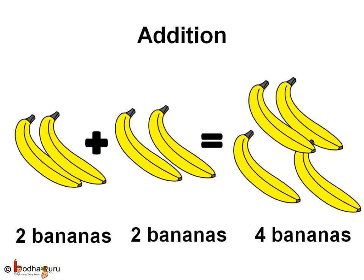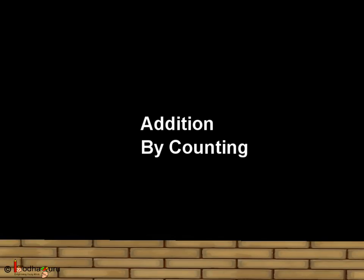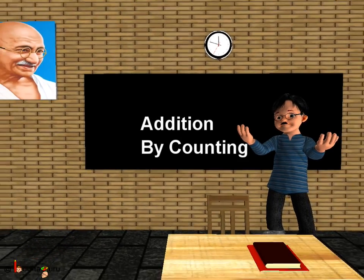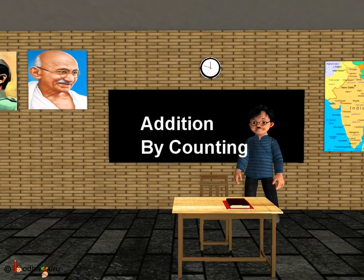Two bananas plus two bananas is equal to one, two, three, four — four bananas, right? So now you know how to add. Bye-bye, children.